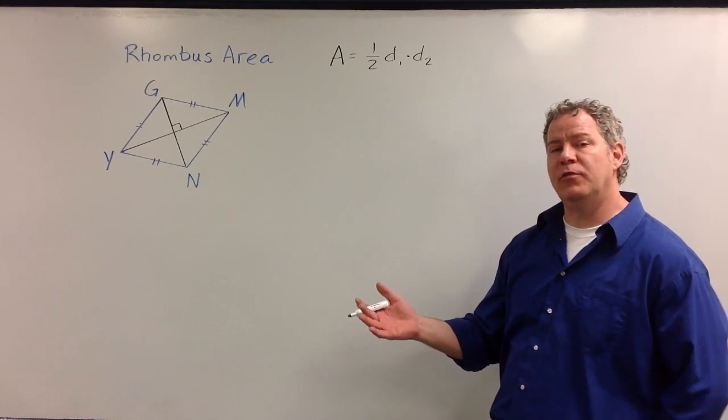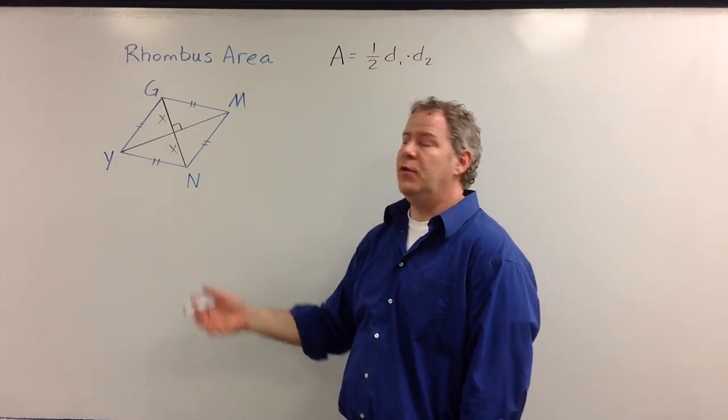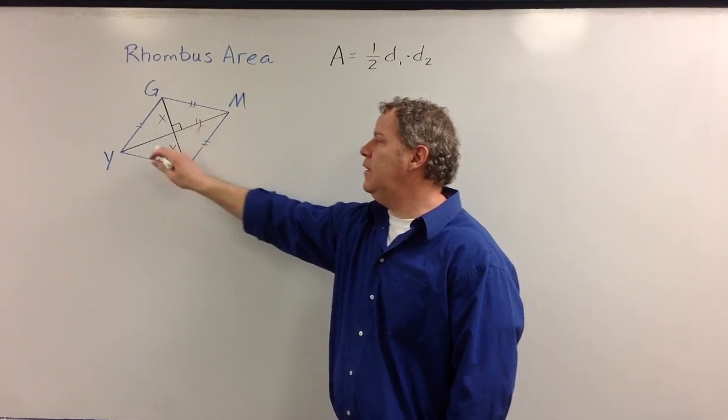If we say that the diagonals bisect each other, we could say that this part is x, and this part is x, and we could say that this part is y, and this part is y.